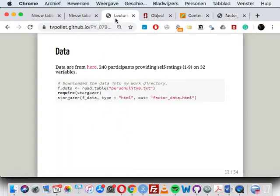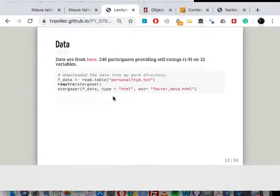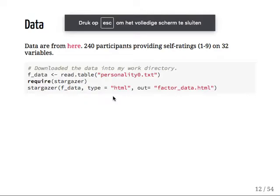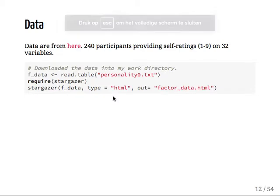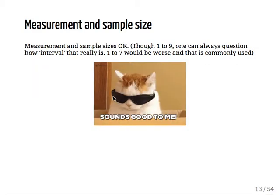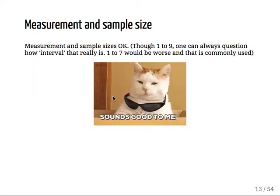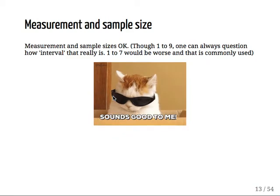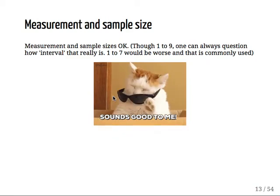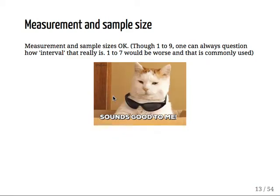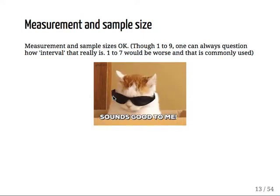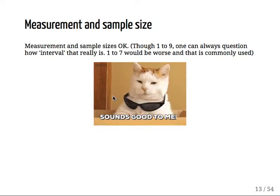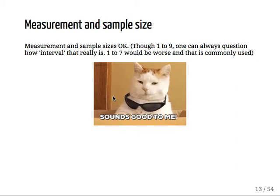These are 240 participants providing self-ratings on a 1 to 9 scale on 32 variables, so 32 traits. So the measurement and sample size are okay. We hit that match-coval 200 mark, so we had 240 participants. It's 1 to 9, so you can always question how interval that really is. But it's better than 1 to 7, perhaps. And it's definitely better than 1 to 5.